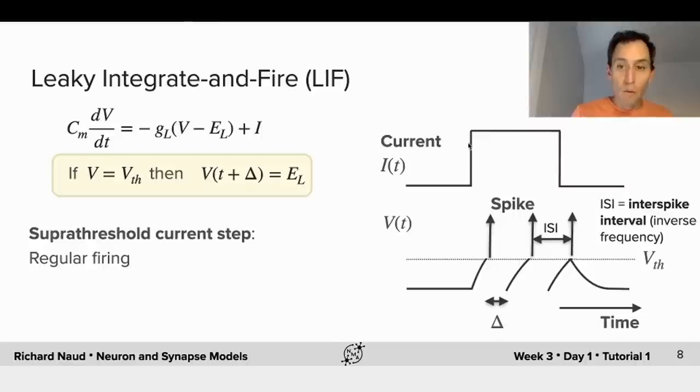And for a constant current, the interspike interval will remain constant. It will change only as the input current is changing.